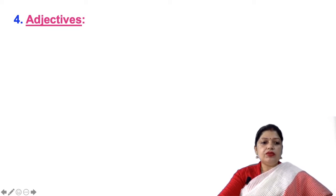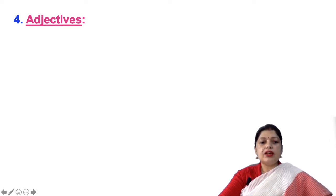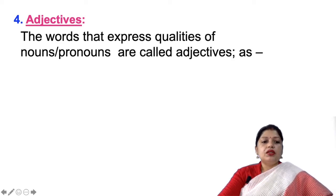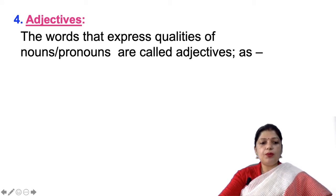In 'adjectives,' the D is silent. When you are reading it, you will not say 'adjectives' — it is 'adjectives.' The words that express qualities of nouns or pronouns are called adjectives, children.